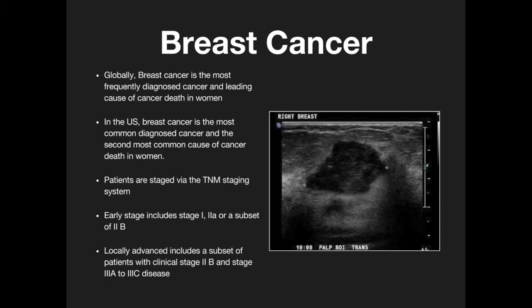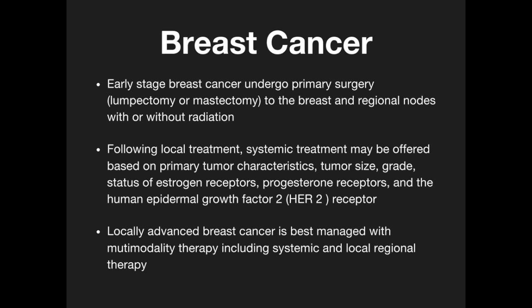Locally advanced includes a subset of patients with clinical stage 2B, 3A, or 3C. Early stage breast cancer can undergo primary surgery — lumpectomy or mastectomy — or breast and regional nodes with or without radiation. A lot depends on the cell type and whether they are HER-receptor negative or positive. Following treatment, systemic treatment is offered based upon tumor characteristics: tumor size, grade, estrogen receptors, progesterone receptors, and the human epidermal growth factor receptor, also known as the HER-2 receptor.